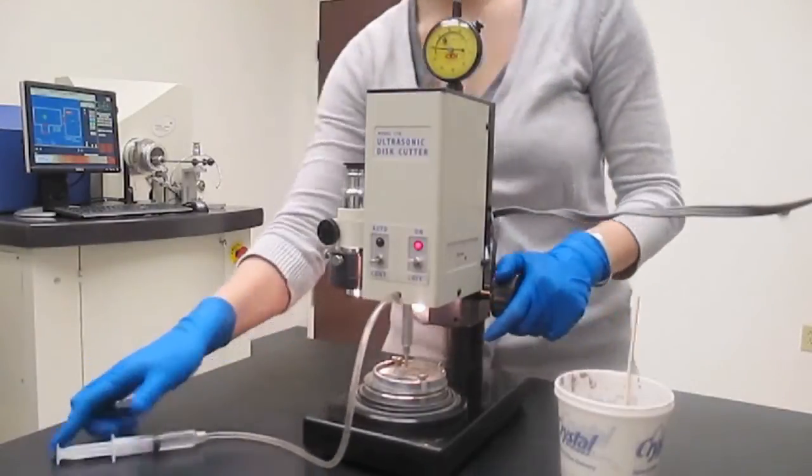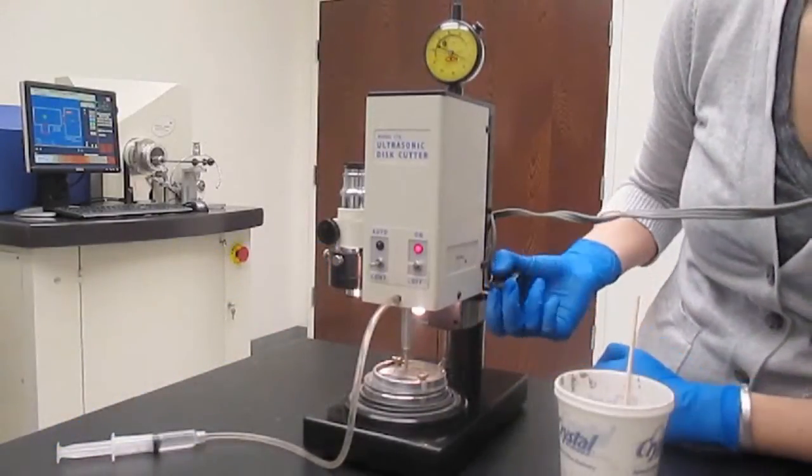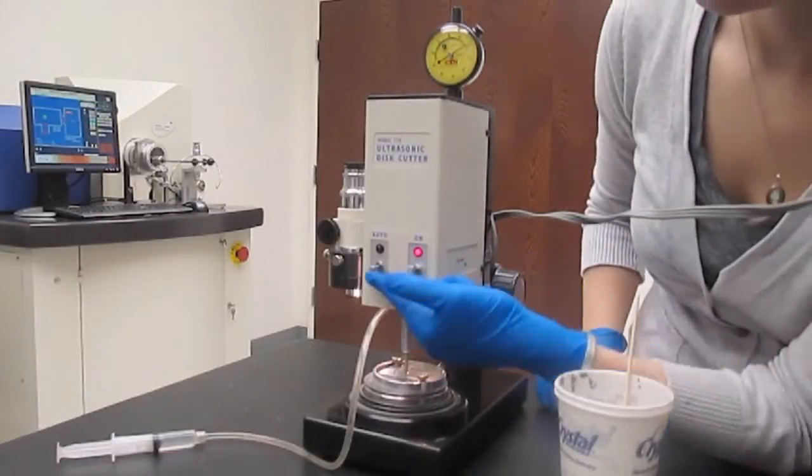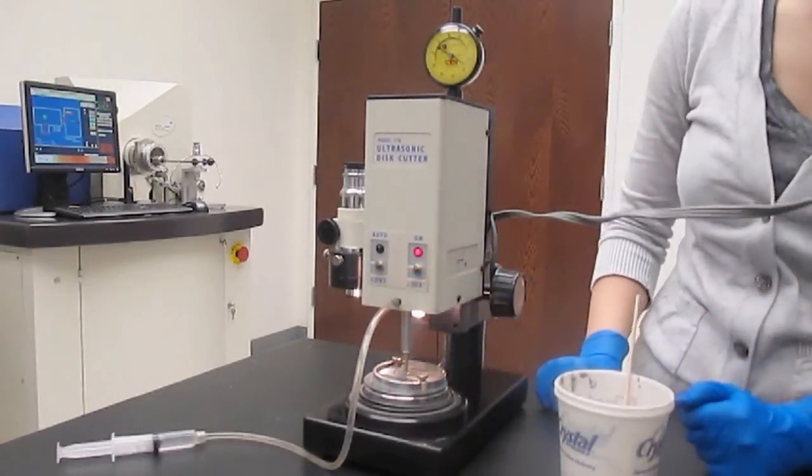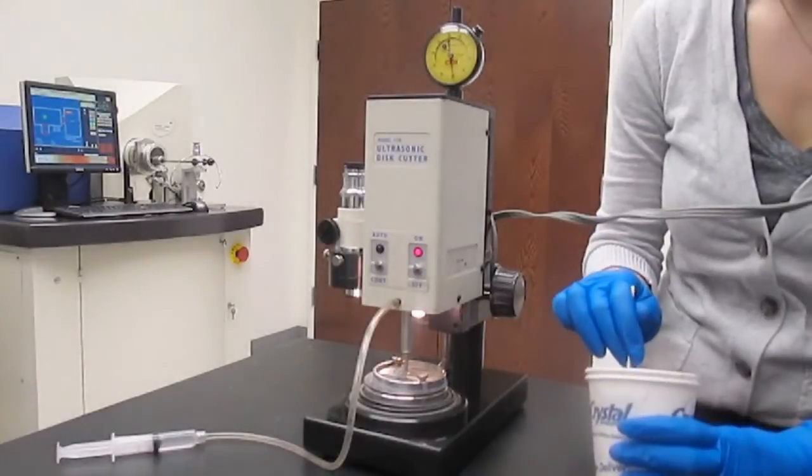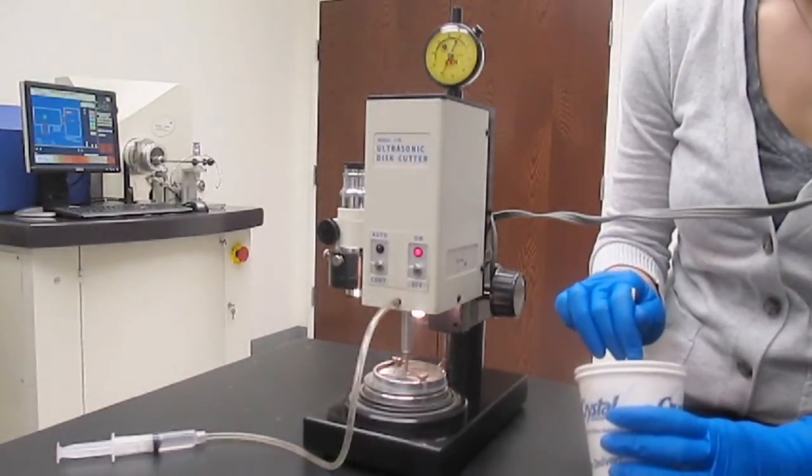Lower the cutting tool until it touches the silicon carbide paste on the surface of the glass. Continue to lower the tool until the stage is slightly compressed. Move the ultrasonic transducer switch to the auto-termination position. Cutting begins immediately.